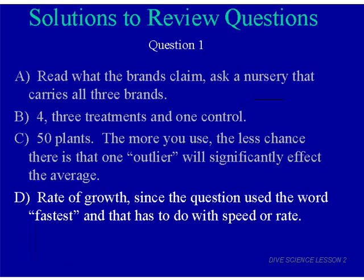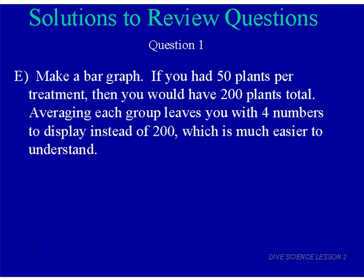Question E: if at a science fair, would it be better to average your results for each treatment and make a bar graph, or list all your raw data in a table? With four treatments of 50 plants each, that's 200 plants — listing all raw data wouldn't be practical. It's better to average each group, giving you just four numbers instead of 200. That's much easier for a judge walking by to understand and draw a conclusion from.